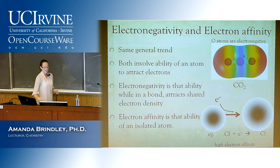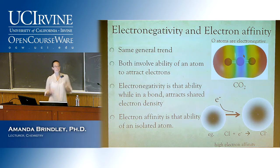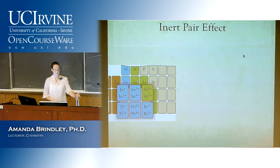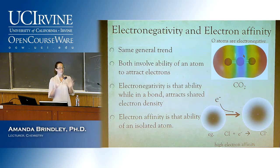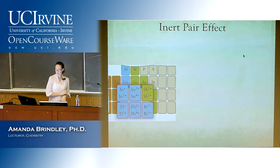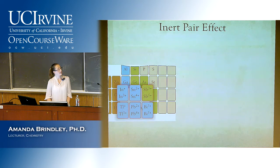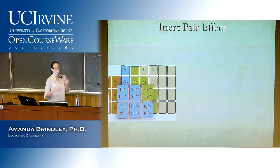Now we're wrapping up periodic trends and moving to the inert pair effect — something mentioned in the fundamentals section to help memorize ion charges. Elements like thallium, lead, bismuth can have charges that differ by two. Looking at antimony and lead as examples, those differences of two are always because of the S electrons. This was used as a memorization trick, but now we can explain it.